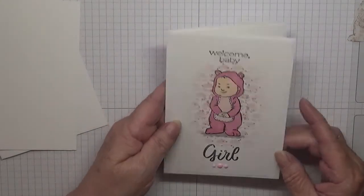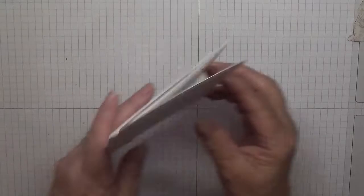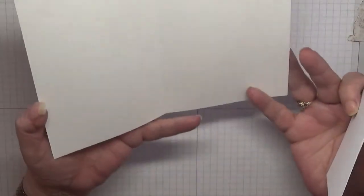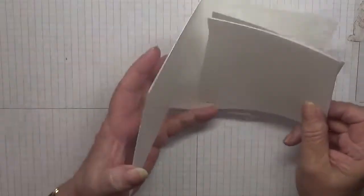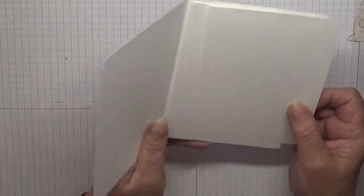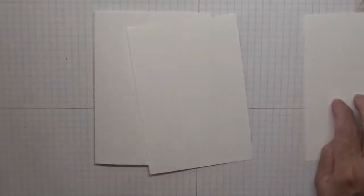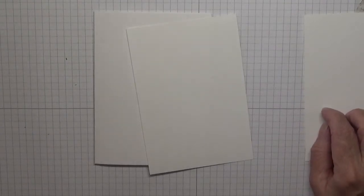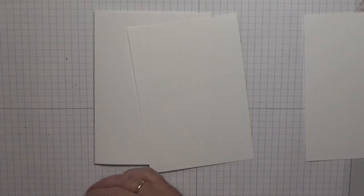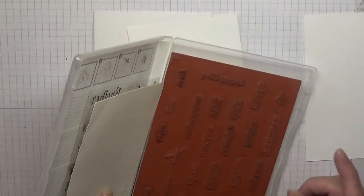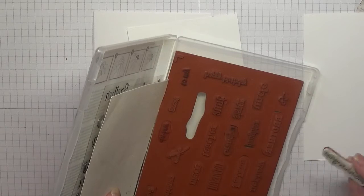Right, for the card I've got a white card base of 8 and a quarter by 5 and 7/8 scored at 4 and 1/8. I've got a piece for inside at 5 and 5/8 by 3 and 7/8, and a piece for the outside same size. What did I stamp? Oh, congratulations.